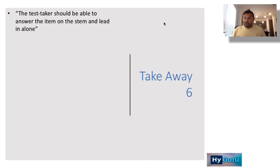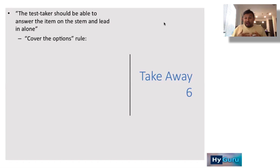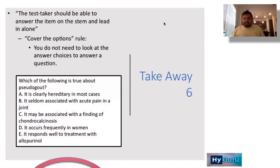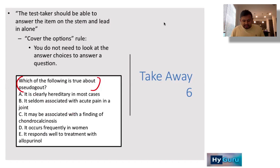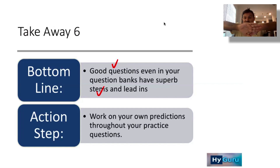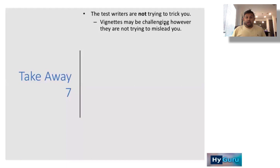Takeaway number six: the NBME says the test taker should be able to answer the item on the stem and lead-in alone — even without the answer choices. This is the basis for the 'cover the options' strategy: predict the answer before looking at the choices. A question like 'which of the following is true about pseudogout' cannot be answered without the choices, so that type will not appear. Pay attention to UWorld stems and work on making your own predictions.